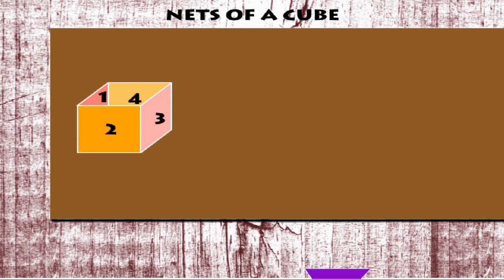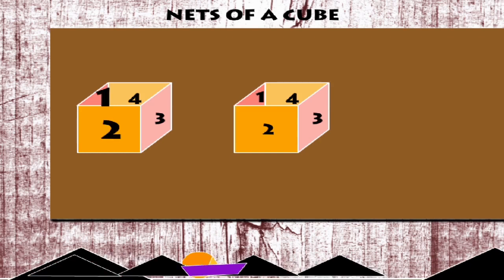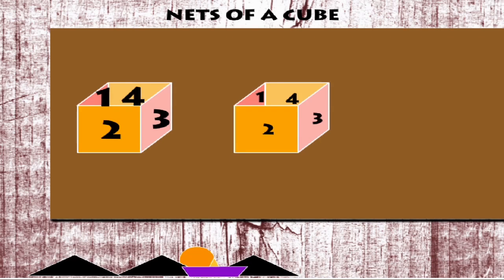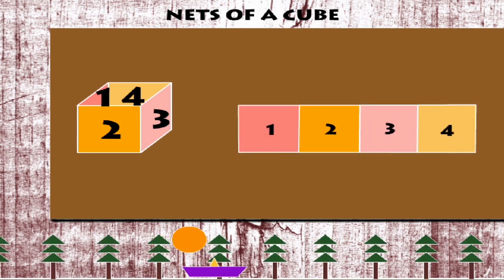Nets of a cube. Here is a cube with an open top and bottom. It is made of 4 square sides: 1, 2, 3, 4. If you open up the sides, this is what they look like.